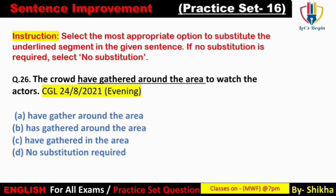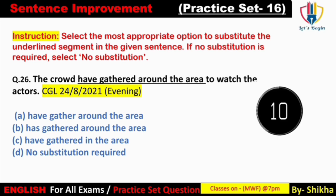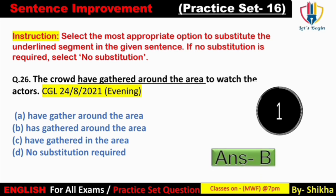Next: 'The crowd have gathered around the area to watch the actors.' 'Crowd' collective noun ke saath singular verb 'has' aata hai. Answer: 'The crowd has gathered around the area to watch the actors.'